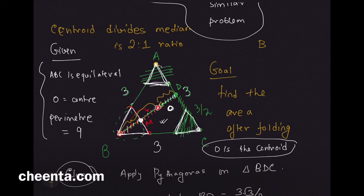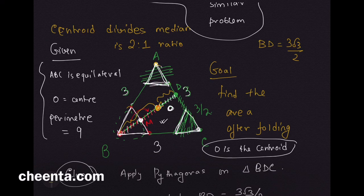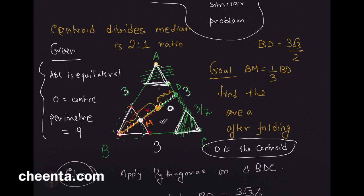We know that BD is 3√3/2, and BO is 2/3 of that. But M is the midpoint of BO, so BM is exactly 1/3 of BD. This is 1/3, this was 2/3, you break it into two parts, each is 1/3. So BM is exactly √3/2.